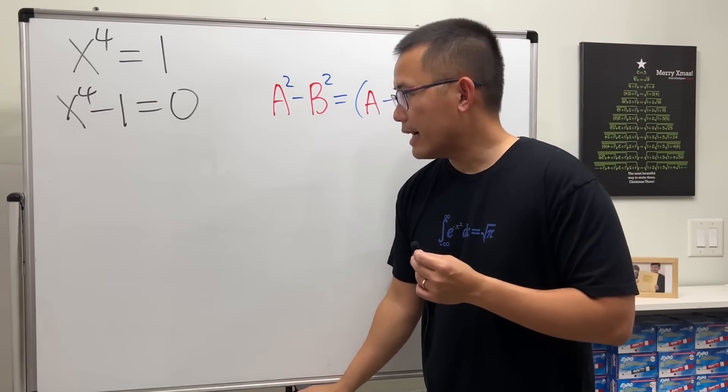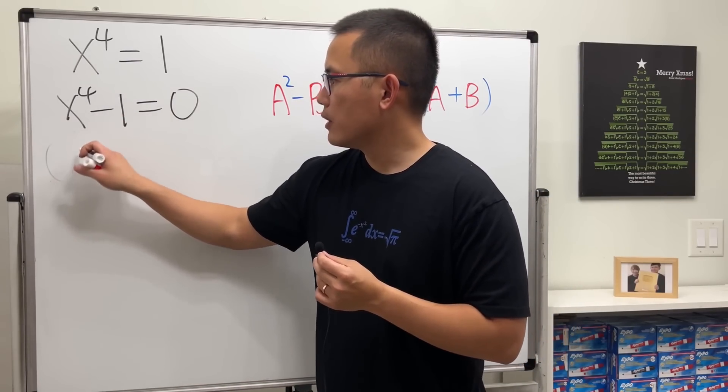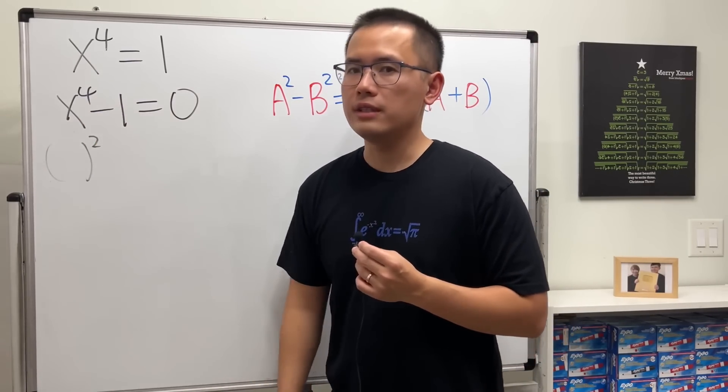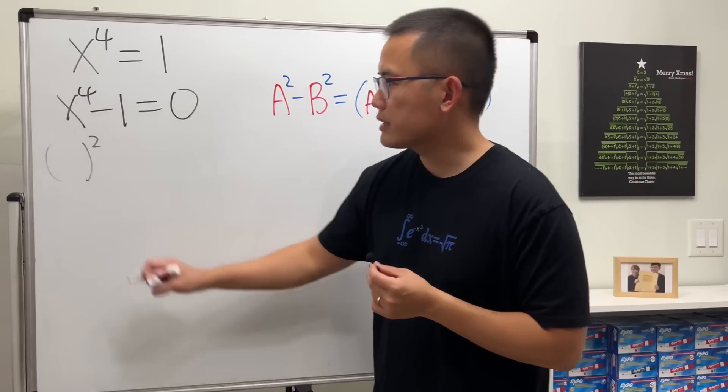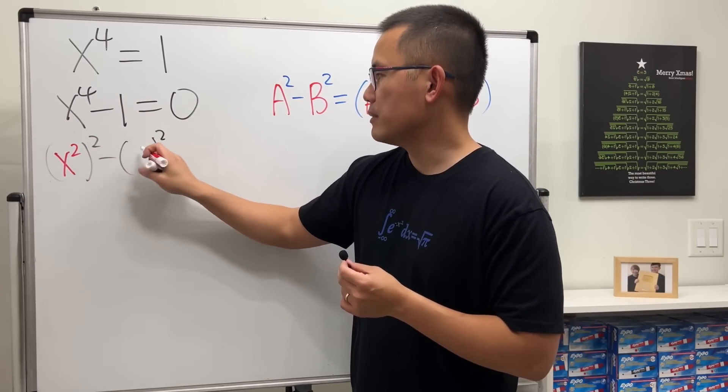Now, we just have to put this into a difference of two square form. What square is going to give us x to the fourth? Well, x squared. And then for the 1, which is very nice, 1 is the same as 1 squared.